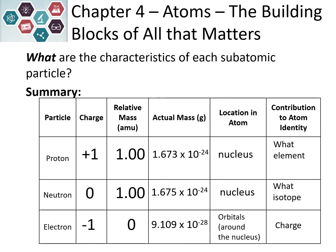When we change the number of protons, that changes the type of element being represented. If we change the number of neutrons, it changes to a different isotope. And if we change the number of electrons, that changes the charge of the atom.